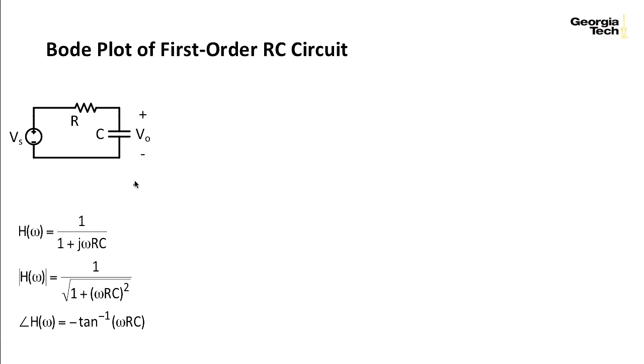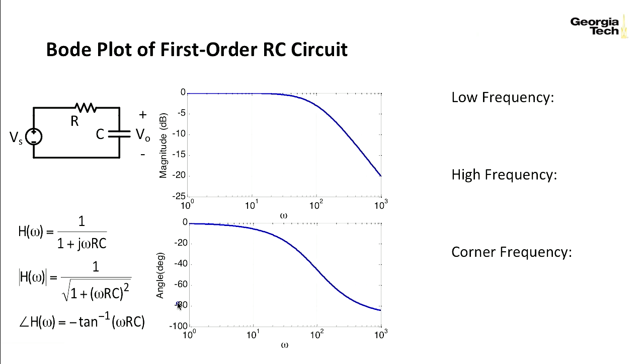Remember how we got that. We looked at the impedance equivalent circuit of this, and then it did a voltage divider law of this impedance over the sum of the two. And if this is the transfer function, then I can find the magnitude here and the angle right here. All I need to do is then plot it on the Bode scale.